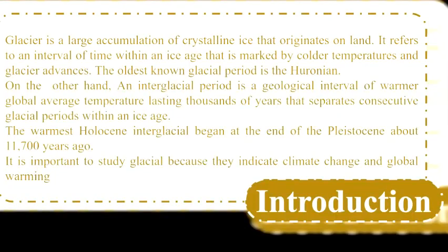On the other hand, an interglacial period is a geological interval of warmer global average temperature lasting thousands of years that separates consecutive glacial periods. Within an ice age, the current Holocene interglacial period began at the end of the Pleistocene about 11,700 years ago.